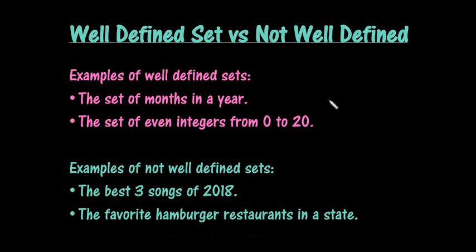A not well-defined set is a set that could change depending upon the information that you have or the person that you talk to. For example, the best three songs of 2018 — this is something that really depends on the person. It could be somebody that listens to country, or pop, or the best three songs somewhere in the world. So this depends on what kind of music people like, and anytime it says something like 'the best' or 'the favorite,' it could change from one person to the next.